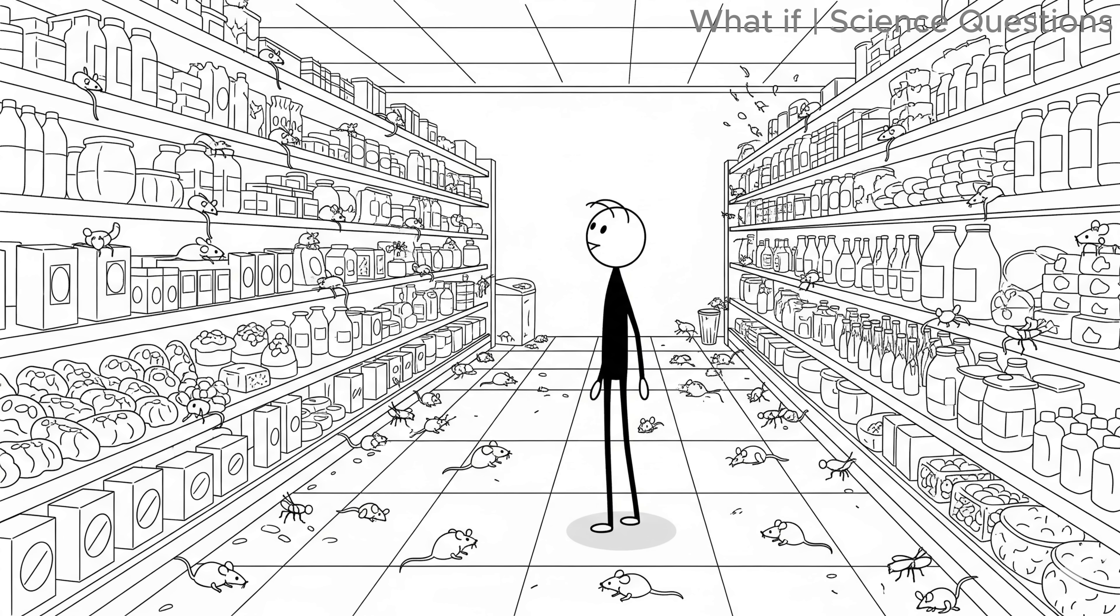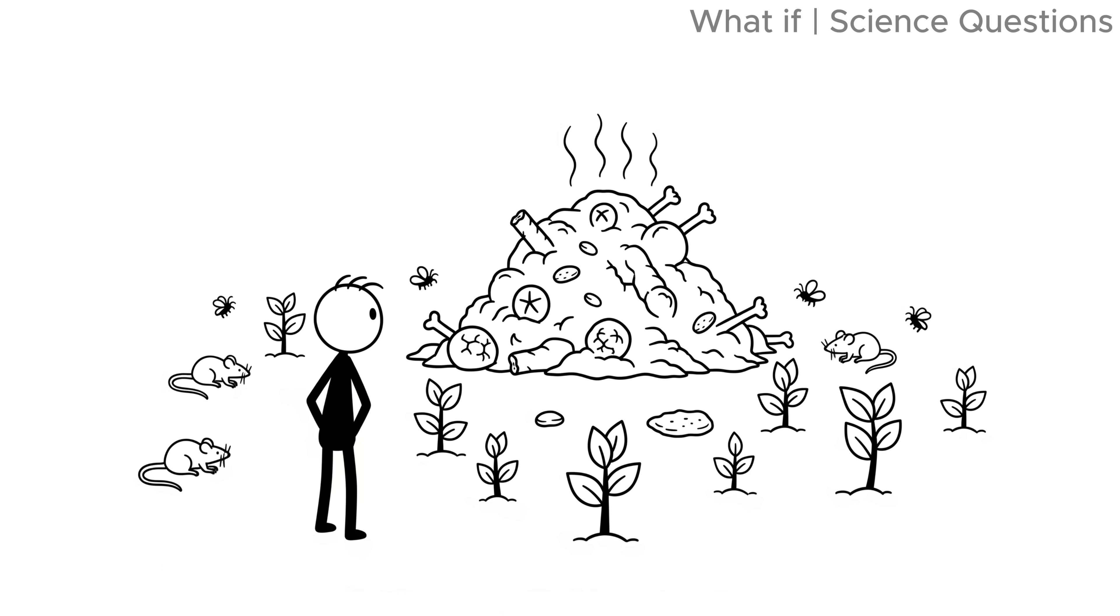Rats and insects would flourish at first, feeding on the endless supplies of leftover food in supermarkets and kitchens. But as that food rotted away, populations would crash, and ecosystems would begin to rebalance.